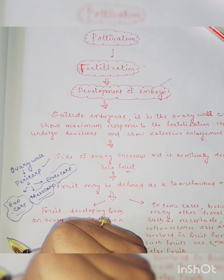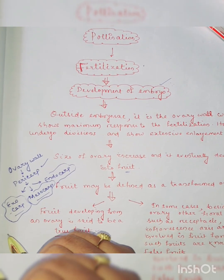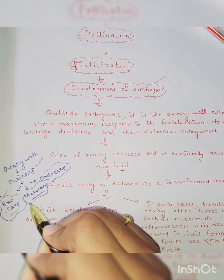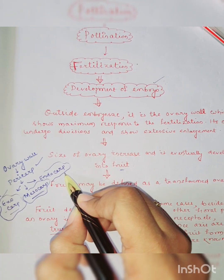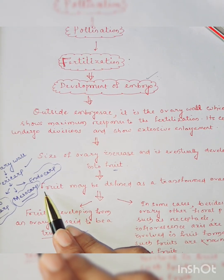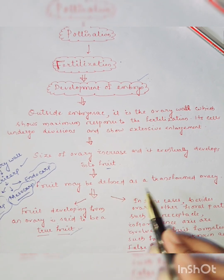And the ovary wall is ultimately called as pericarp or fruit wall. That fruit wall is again divided into outer exocarp, middle mesocarp and inner endocarp.